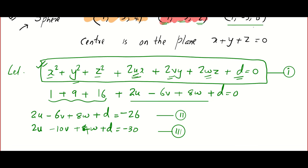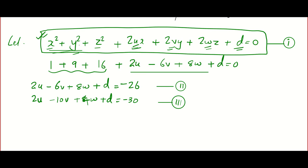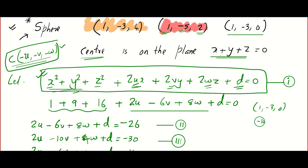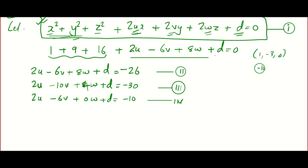For point (1, −3, 0): 1 + 9 + 0 + 2u − 6v + 0w + d = 0, giving 2u − 6v + d = −10. Call this equation 4. We need one more equation — the center (−u, −v, −w) lies on the plane x + y + z = 0, so: −u − v − w = 0. That gives us the fourth equation.